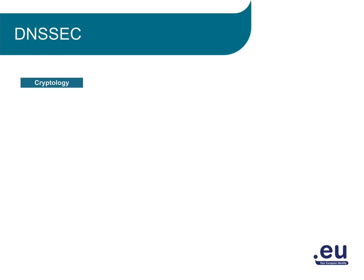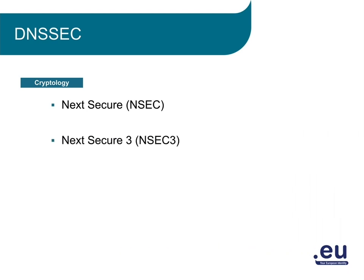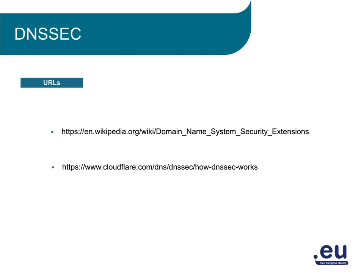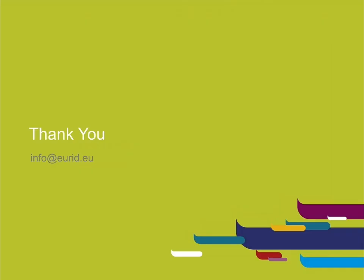There is more to say about DNSSEC, but this is sufficient for this course. There are the NSEC3 resource records, the NSEC records, and the second generation of DNSSEC, DNSSECBIS. These are items that will be mentioned when we create the DNS keys and store them at URIT. As promised, here are some links to interesting documentation on the internet about DNS and DNSSEC. Thank you for your attention. If you have any questions, please contact us.